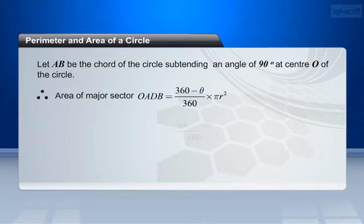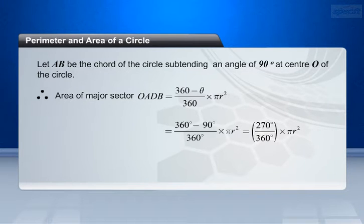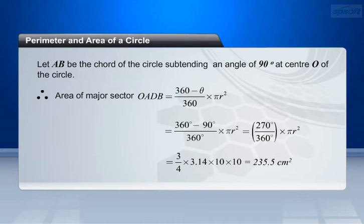Equals (360 degrees minus 90 degrees) by 360 into pi r square. Equals 270 degrees by 360 degrees into pi r square. Equals 3 by 4 into 3.14 into 10 into 10. Equals 235.5 cm square.